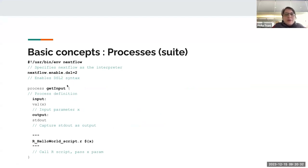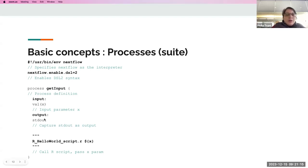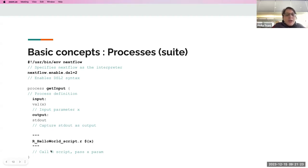Here we'll run a demo of a very basic process. We specify the Nextflow interpreter, enable DSL2 syntax, then have the process definition. The input is a value — input parameter x. The output will be what we capture from the console: stdout as output. We're calling an R script that passes the parameter x.